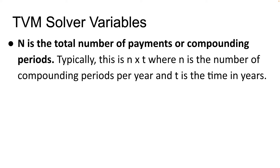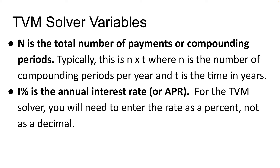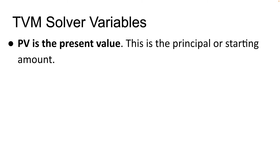Capital N is the total number of payments or compounding periods. Typically this is N times T, where N is the number of compounding periods per year and T is the time in years. I percent is the annual interest rate or APR. For the TVM solver, you will need to enter the rate as a percentage and not as a decimal. PV is the present value — this is the principal or starting amount.